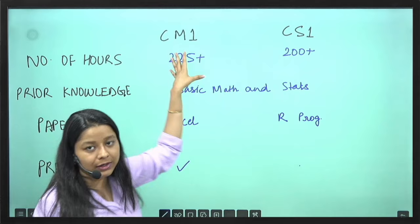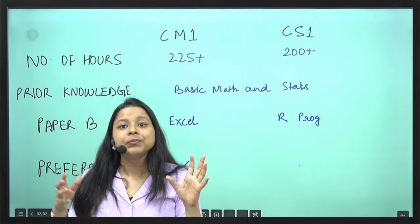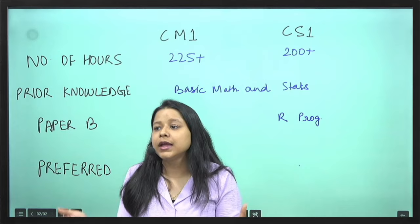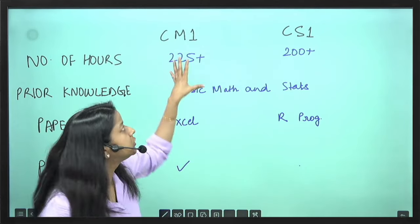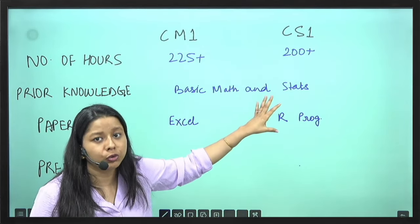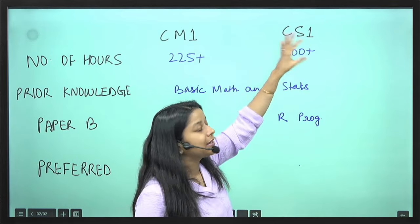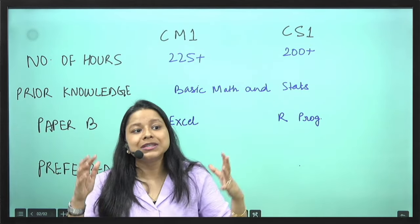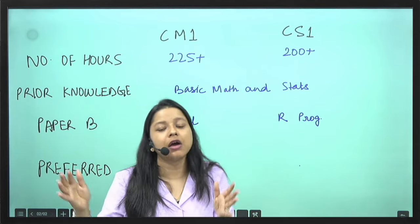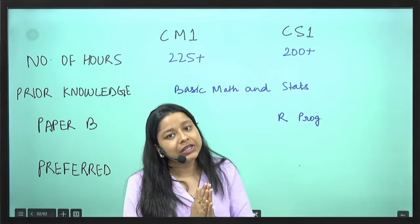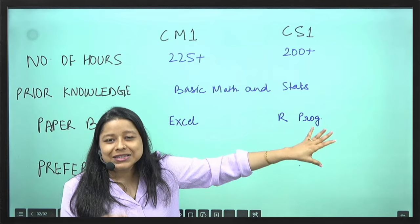So there is 225 plus hours that you need to study. If you are taking up classes from anywhere, if you are doing self study, this should be the amount of time you need to invest. CS1 is 200 plus hours. So both papers need that good 4, 4 and a half, 5 months amount of studies. CS1 slightly lesser.